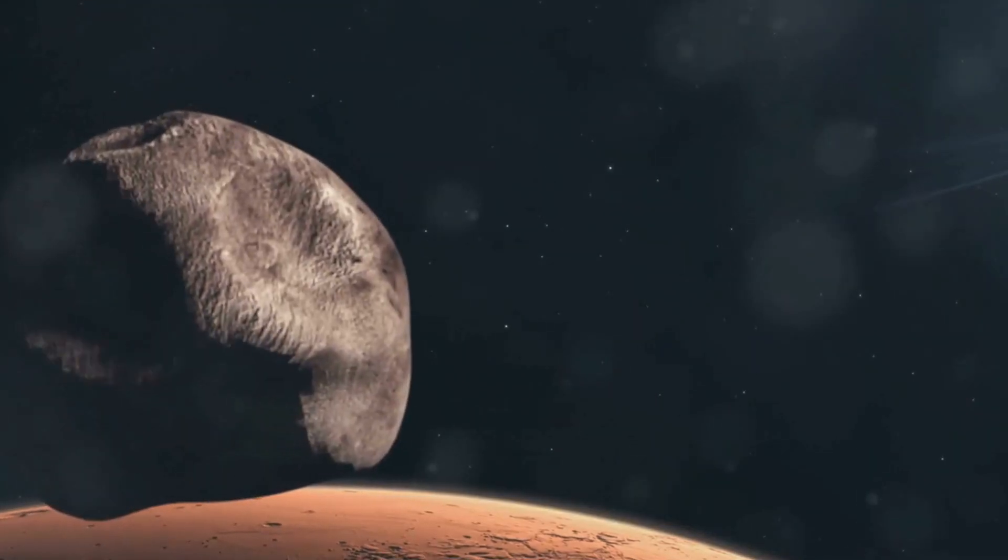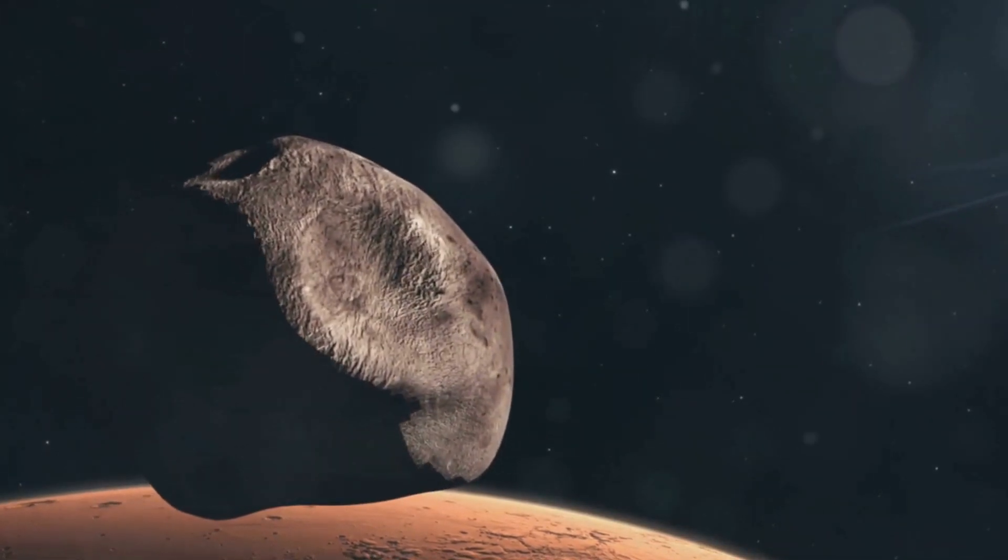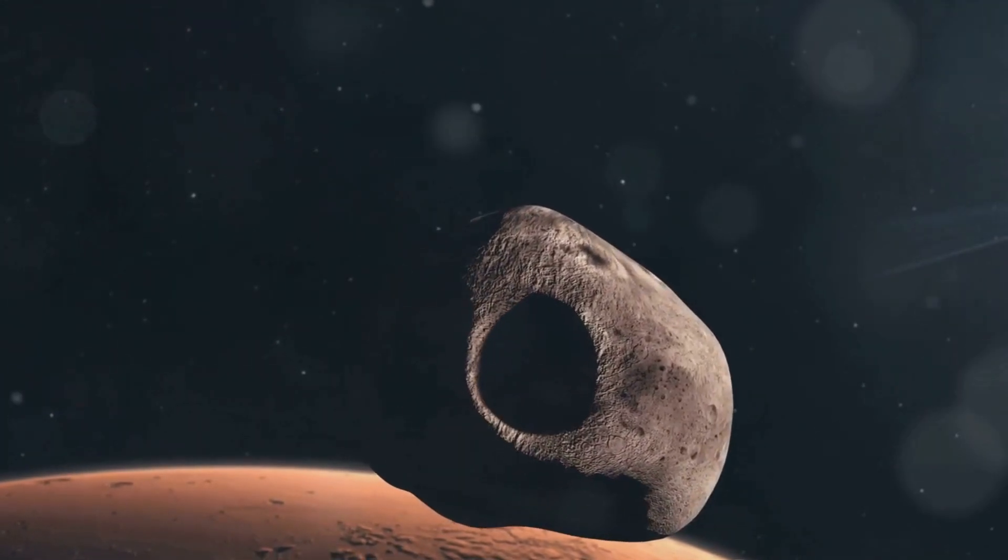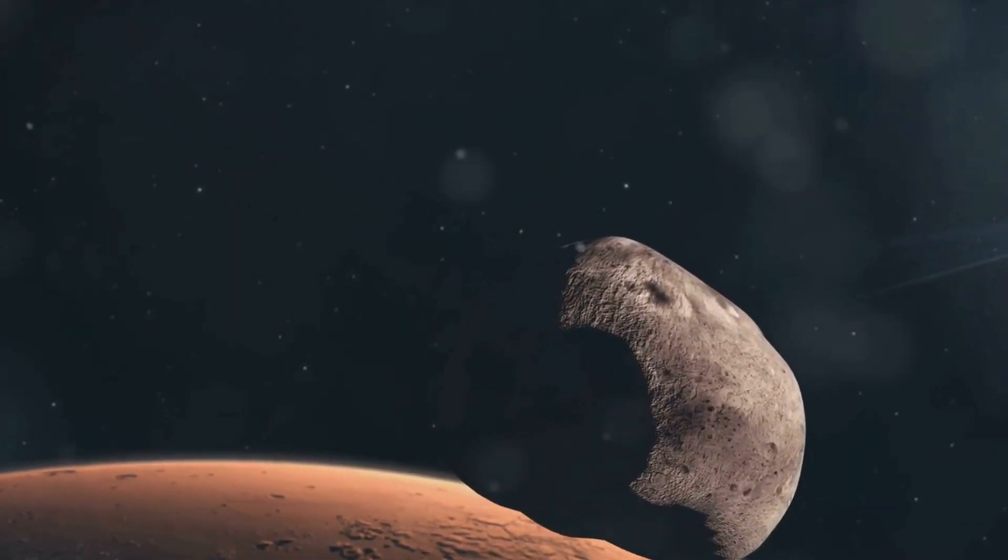Next we have Mars, the red planet. With its two small moons Phobos and Deimos, Mars experiences solar eclipses quite frequently. But these aren't like the total solar eclipses we know on Earth.